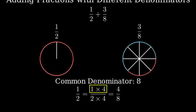To do this, we multiply both the numerator and denominator by 4. 1 half equals 4 eighths.